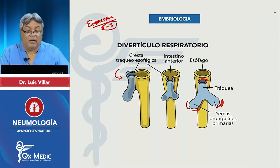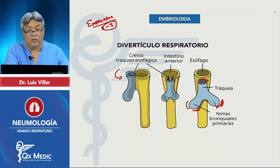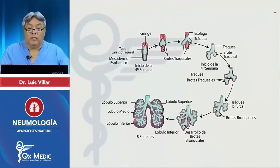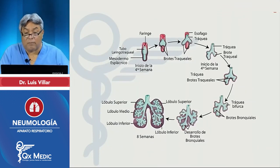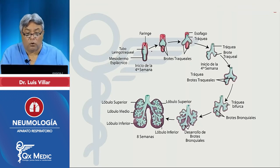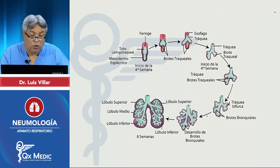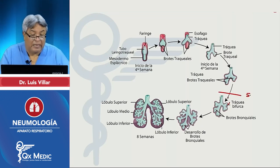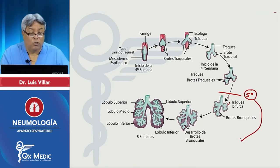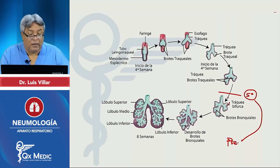En la cuarta semana empieza a aparecer la yema derecha con tres bifurcaciones y la yema izquierda con dos bifurcaciones. Así, al inicio de la cuarta semana se había formado la yema, el divertículo respiratorio, que termina formando los brotes traqueales. Al final tenemos la tráquea, los brotes pulmonares, y estos brotes bronquiales van bifurcándose hasta que a partir de la quinta semana empieza el siguiente periodo: el pseudoglandular.